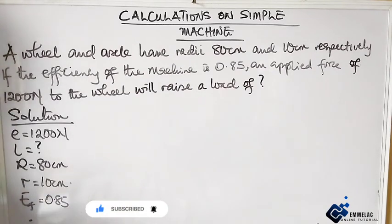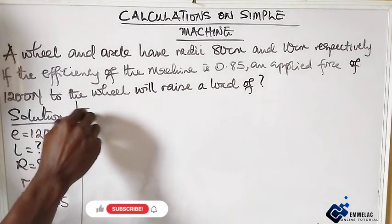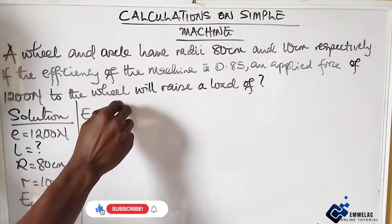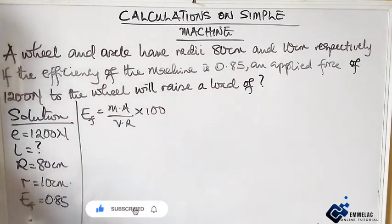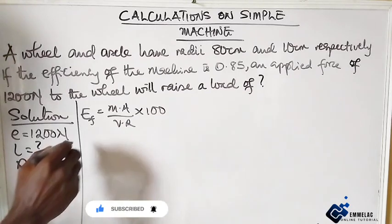Let us recall that efficiency equals the mechanical advantage over velocity ratio times 100. What else do we need here? The velocity ratio.